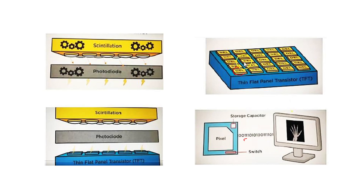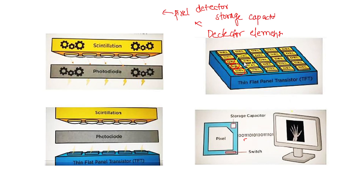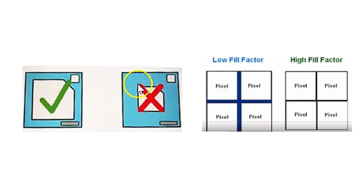The thin flat panel transistor is made up of very small detector elements, called DELs. Each detector element consists of a pixel detector and a storage capacitor. The pixel detector captures the image, while the storage capacitor stores the electric charge released from the photo diode. A switch is also present which releases the electric charge, producing the digital image. These are the three important parts of the thin film transistor in indirect digital radiography.